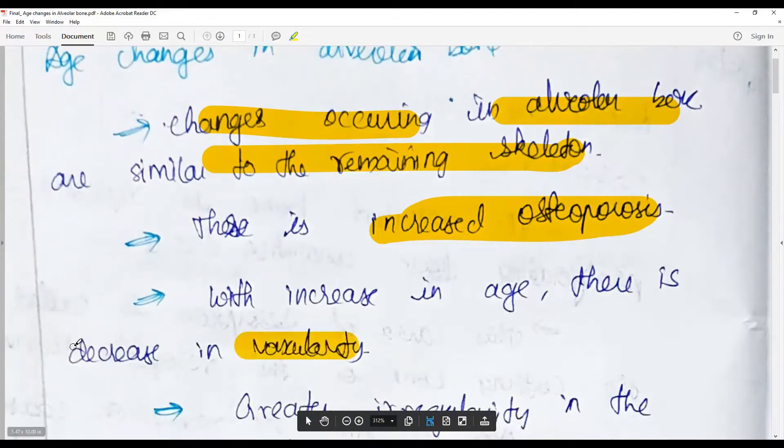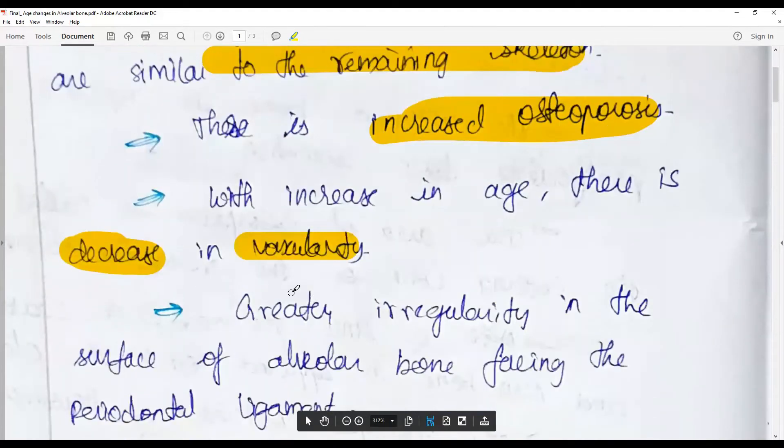With increase in age there is decrease in vascularity. Decrease in vascularity is the key, and with this decrease in vascularity the amount of nutrition and oxygenation available is reduced, so the bone remodeling rate is reduced.